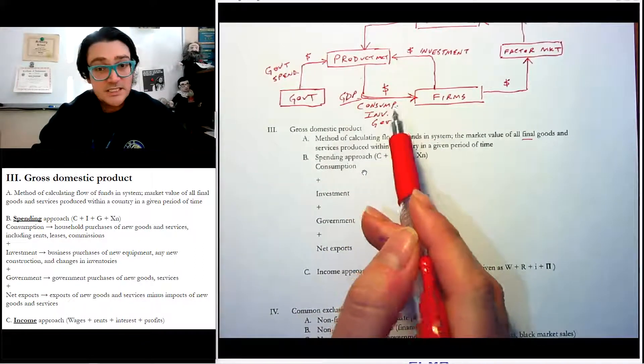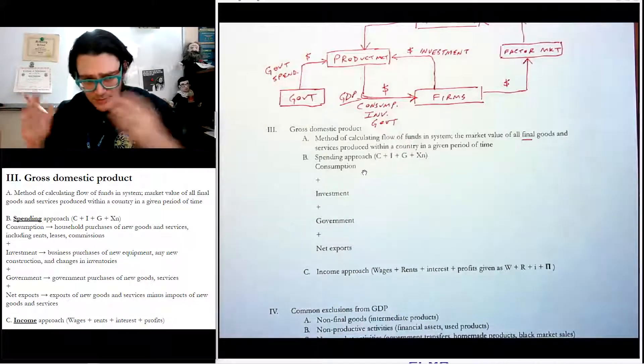It also includes things like services. So we sometimes forget services are a big part of the account. Another piece of this is that they have to be produced in that current time period. The given year. So it wouldn't include something made three or four, five years ago. And it has to be within the country. It doesn't matter who made it within the country, but it does have to be within that country. Now there are four components of this spending approach to calculating all of the market value of all final goods and services. They are consumption, investment, government, and net exports. Now up here, I just said consumption, investment, government, because we didn't draw the open economy, but let's be real. There are things called imports and exports.